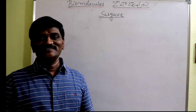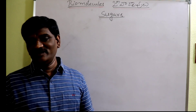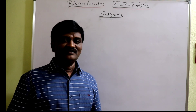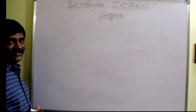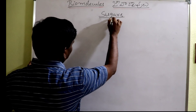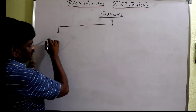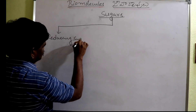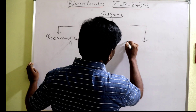Hi students. In the last session, we discussed classification of carbohydrates based on number of carbon atoms and functional group. In this session, I am going to explain another kind of classification based on reducing nature. Based on reducing nature, sugars are classified into two types: reducing sugars and non-reducing sugars.